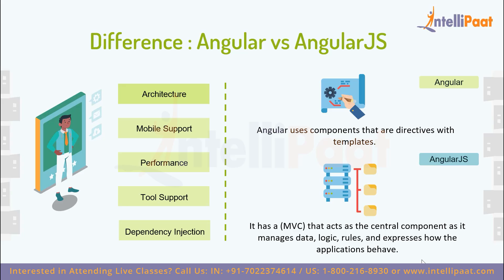Talking about architecture: Angular uses components that are directives with templates, whereas AngularJS has MVC — Model View Controller — that acts as the central component, managing data, logic, and rules, and expressing how the application behaves. This is the first difference between Angular and AngularJS.